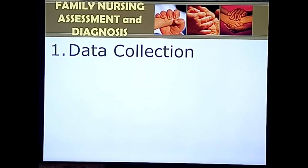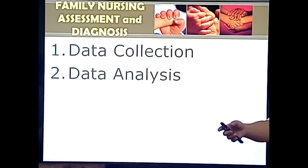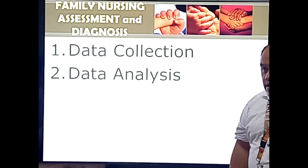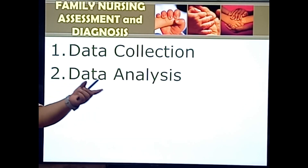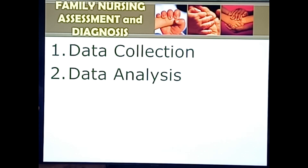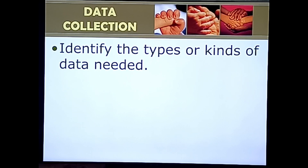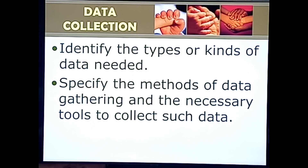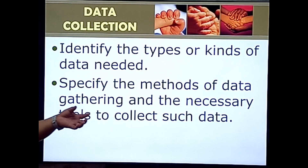In the assessment, we identify the types of data needed. For data collection, we gather primary and secondary data. Primary data are data provided by the people themselves, while secondary data are data documented from different resources — such as research and statistics provided by the community. We also specify the methods of data gathering and the necessary tools for data collection.